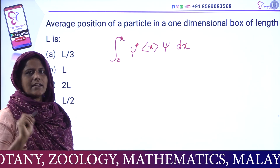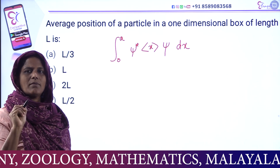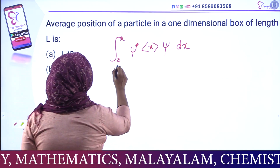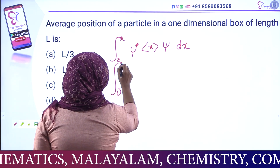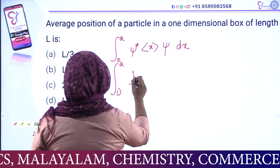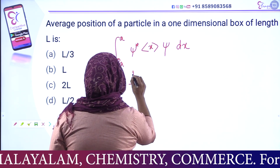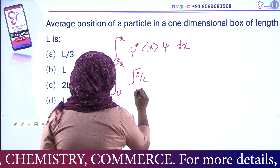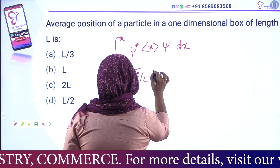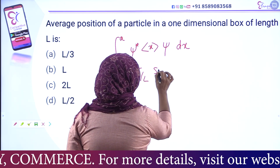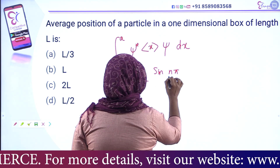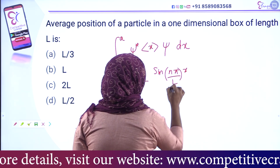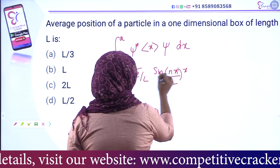For the particle in a one-dimensional box, we substitute the wave function ψ, which is root 2 by L times sin(nπx/L). The integral from 0 to a is: root 2/L times sin(nπx/L) times x times sin(nπx/L) dx.